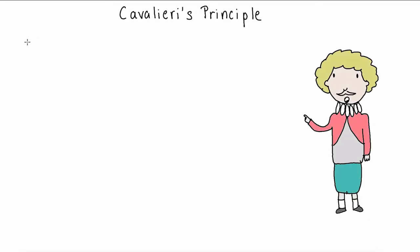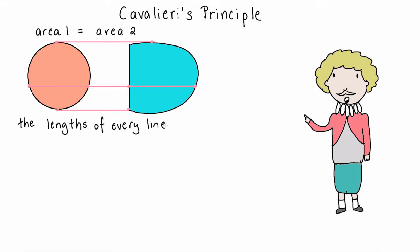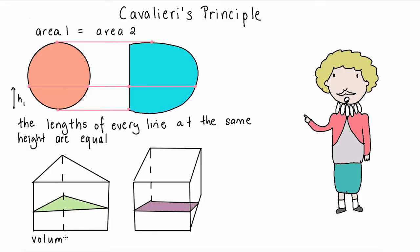Cavalieri's principle states that if we have two solids of equal height sitting on the same plane with equal cross-sectional areas, as though we have sliced these solids up into flat cross sections, then the volume of these two solids must be equal.